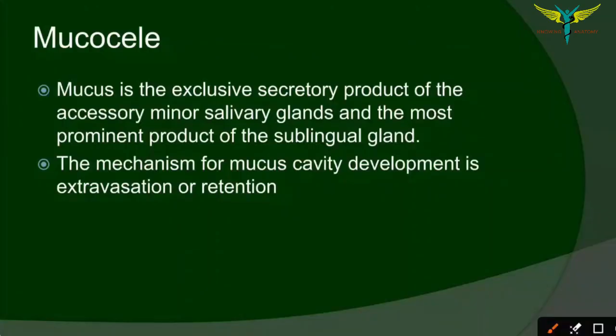In this video, let's learn about mucocele and also ranula. Mucus is a secretory product that is produced by a minor salivary gland, and mucus is the most prominent product of the sublingual gland.